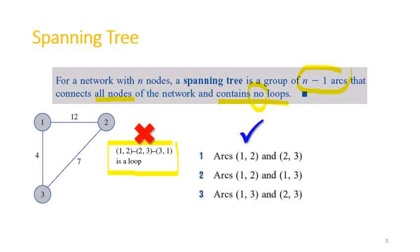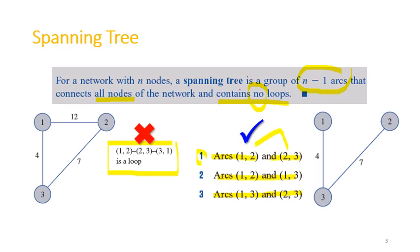However, these 3 possibilities of arcs are each a spanning tree. For example, selecting the arc from 1 to 3 and 2 to 3 is a tree. If you choose arcs 1 to 2 and 2 to 3, it is also a tree. If you choose 1 to 2 and 1 to 3, it is also a tree. Because we have only 2 arcs in each of these options and they all contain no loops, these 3 pairs of arcs are all spanning trees.